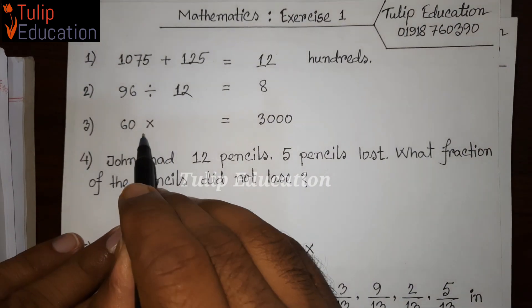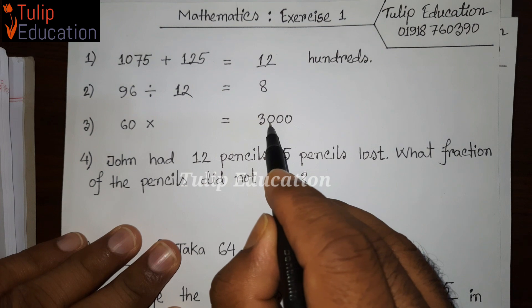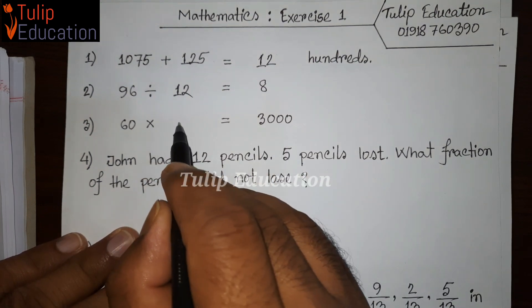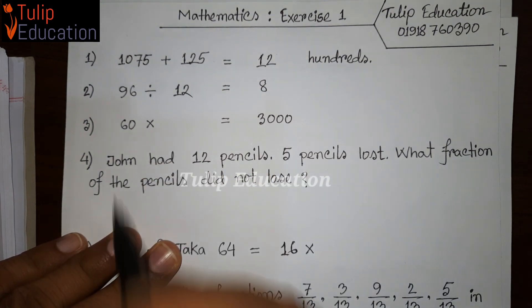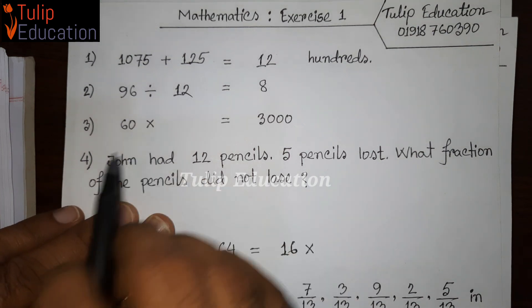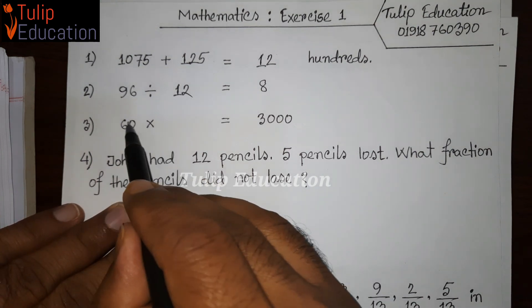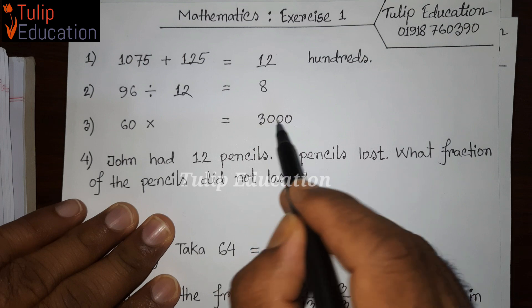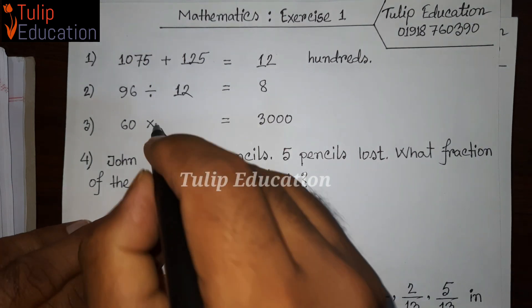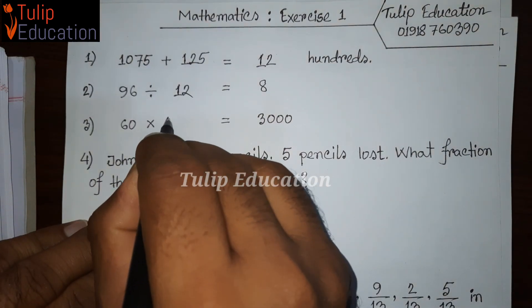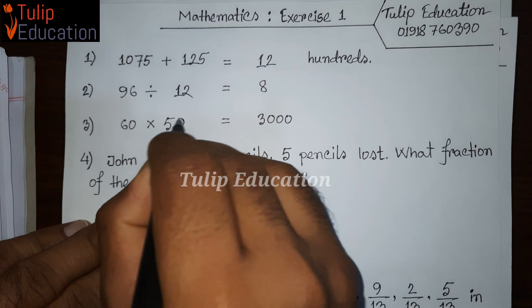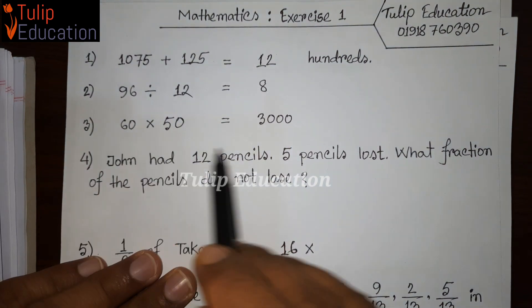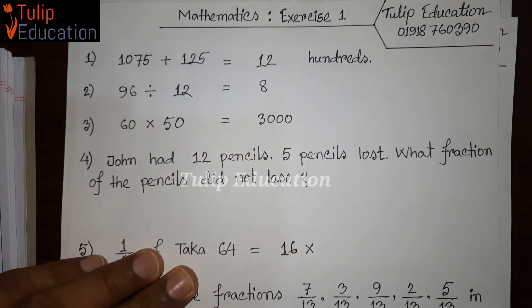We divide the result into 60. Normally, 6 is 300, and 6 times 5 is 30. So 60 plus 50 multiplied gives us 3000.